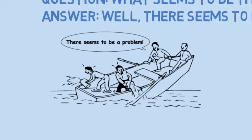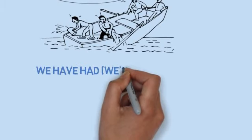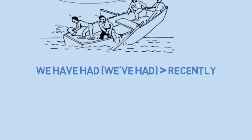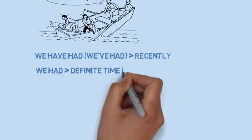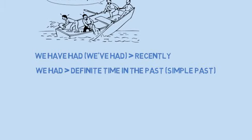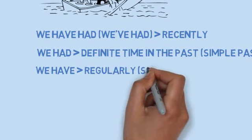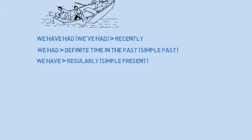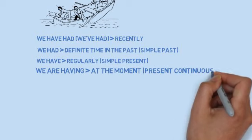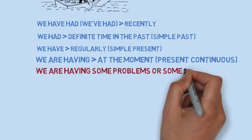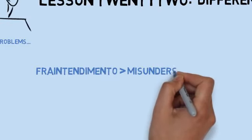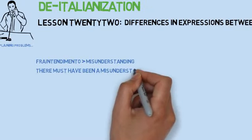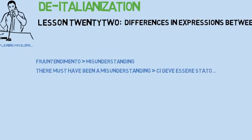It's not easy — it's different from Italian and it creates problems. It doesn't give the right meaning. They'll understand it, but it's nice to get the right expression. 'There seems to be a problem with.' We can also say 'we've had some trouble' or 'we had some trouble.' 'We have had' means recently; 'we had' refers to a definite time in the past — that's the difference with the present perfect. You can also say 'we are having some trouble,' which means at the moment, right now.